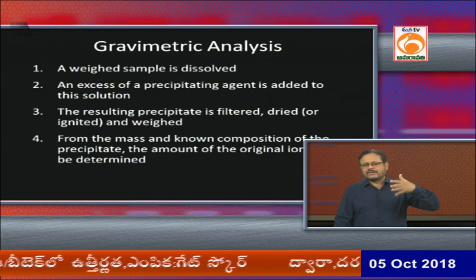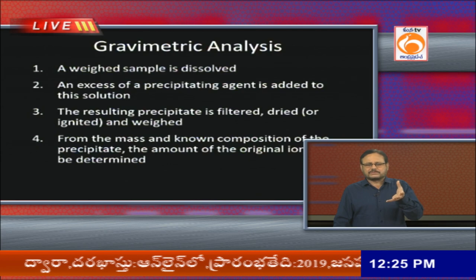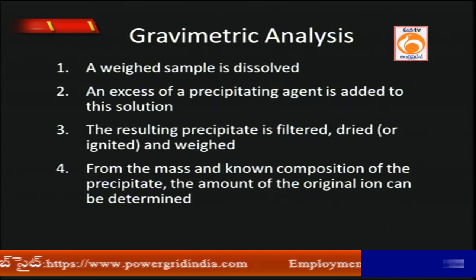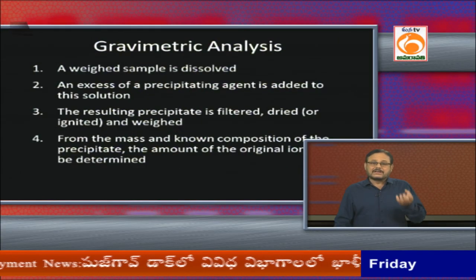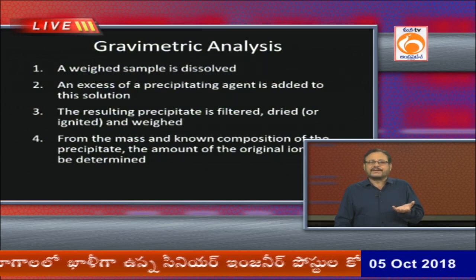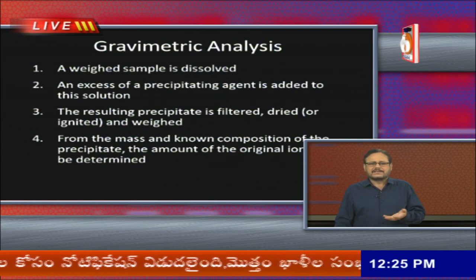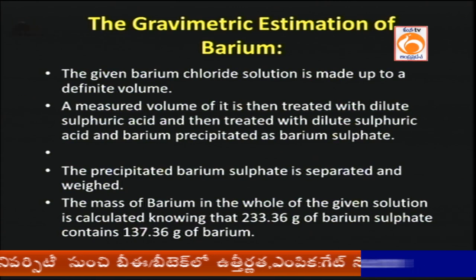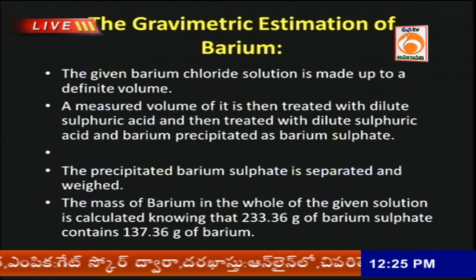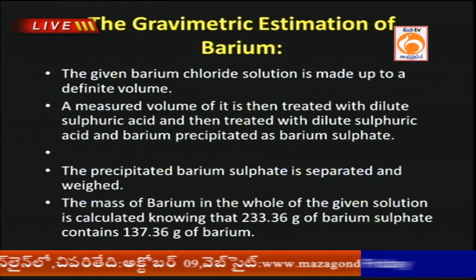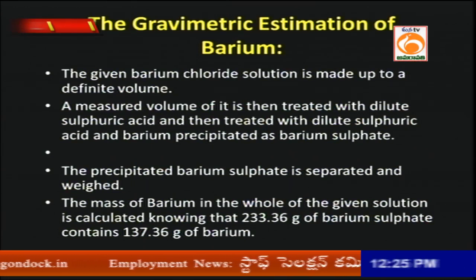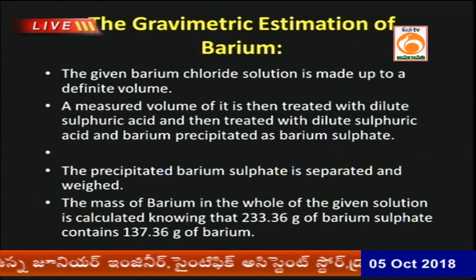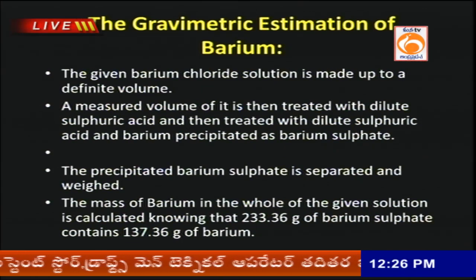In precipitation gravimetry, a dilute precipitating reagent is used in excess to get exact precipitation. Once precipitation is done, it is dried and weighed. An example is the estimation of barium from barium chloride solution — dilute sulfuric acid is added in excess to get a barium sulfate precipitate, which is then filtered, cleaned, dried, and weighed to get the exact quantity of substance in the sample.